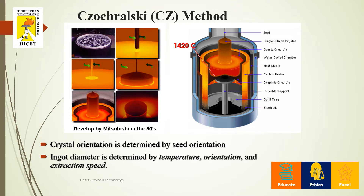In the Czochralski method, molten silicon is placed in a graphite crucible with a quartz crucible and a heat shield. When the silicon is placed inside and a seed orientation is set, the crystal orientation can be determined by the seed orientation. When the assembly is allowed to spin at a certain RPM and the seed is pulled up, a silicon crystal can be obtained. The ingot diameter is determined by the temperature, orientation, and extraction speed.